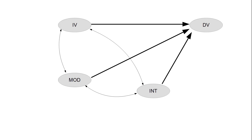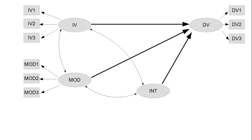So here we have a latent independent variable, a latent moderator, and a latent interaction. In SEM, we have measurement models estimating our latent variables. The key question is: how do we measure a latent interaction? There are several different approaches for that. Here I will show you the approach of double mean centering.